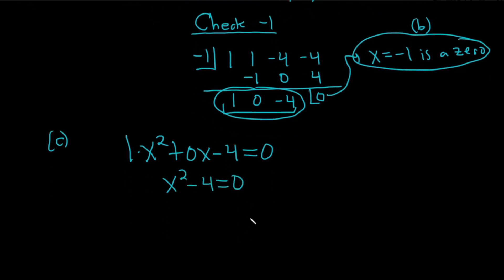This is actually the difference of squares. So this is x minus 2, x plus 2. And this is equal to 0. So you get two possible answers, 2 and negative 2. And those are the other zeros. So the three zeros of this function are negative 1, negative 2, and 2. Those are the zeros of this function.